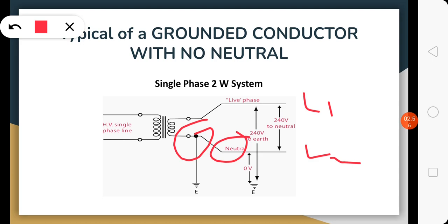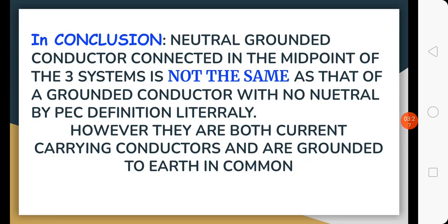It is grounded, so they call it line to ground actually, but sometimes they call it line to neutral because it is a grounded conductor without neutral. It is commonly used as line to ground in far-flung areas, but can also be called line to neutral without the real neutral. That is a typical grounded conductor with no neutral. In conclusion, your neutral conductor is actually connected in the midpoint.